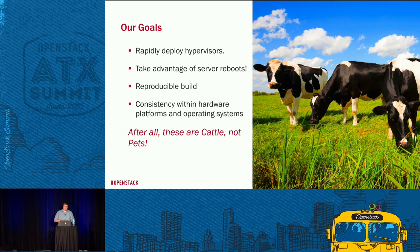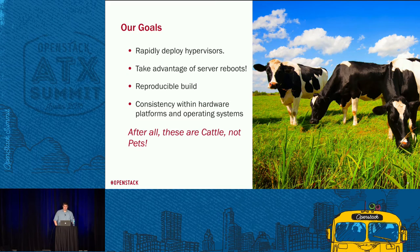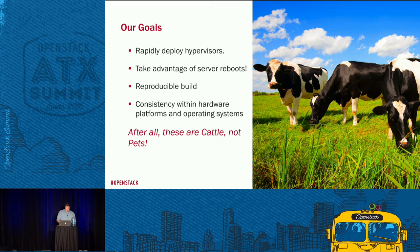Our goals with this project were to rapidly deploy hypervisors and take advantage of every server reboot — whether from maintenance or hardware failure — to bring the system up to the latest spec. These systems usually run a long time without a reboot, so it's imperative to take that opportunity. We wanted a reproducible image that we could pass around to developers, engineers, and QE so everyone works with exactly what's in production. These are cattle, not pets — they have one goal: run instances.